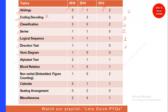Venn Diagram is a good category of questions but was not seen in 2014 and 2012; however, it appeared in 2016, so based on recent trends you can expect one question from it. For Alphabet Test, we have seen two questions, so you can expect a minimum of two questions from this section as well. For Blood Relation, based on recent trends there is at least one question. For Non-Verbal reasoning, you can expect one to two questions. For Calendar, you can see one question. For Sitting Arrangement, only in 2014 were two questions asked, so you can expect two questions. There are also some miscellaneous category questions.